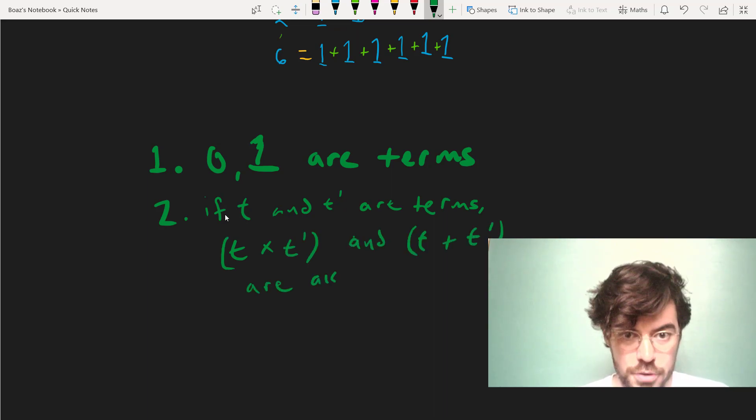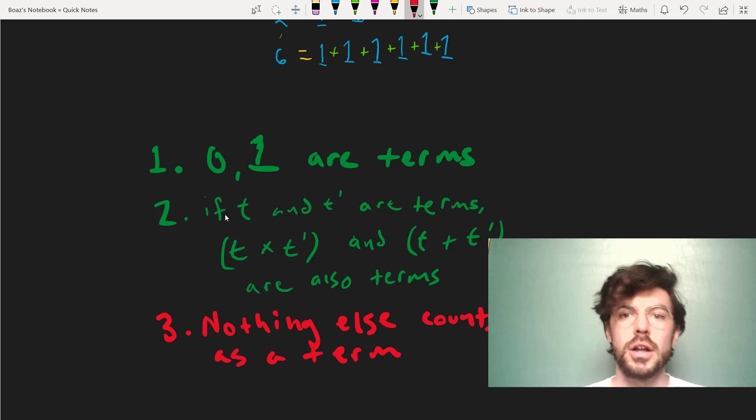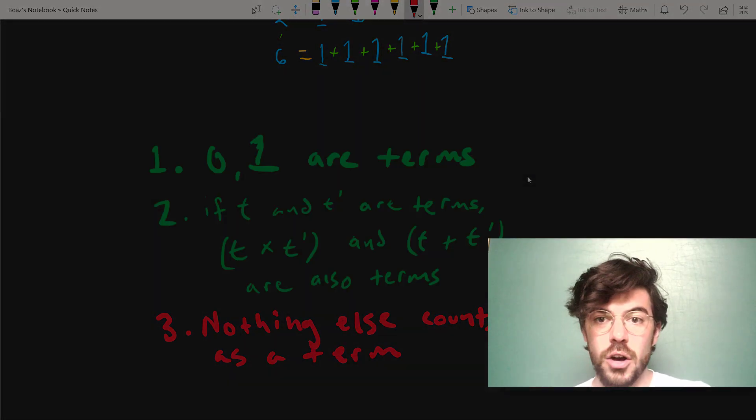The third rule is very restrictive. Nothing else counts as a term. On the basis of these three rules, we can construct proofs about infinite sets of numbers. And if you go on to do more advanced logic, you'll see this method, the inductive method, used quite a bit. So it's worth keeping in mind, although again, we won't be discussing it in this course.